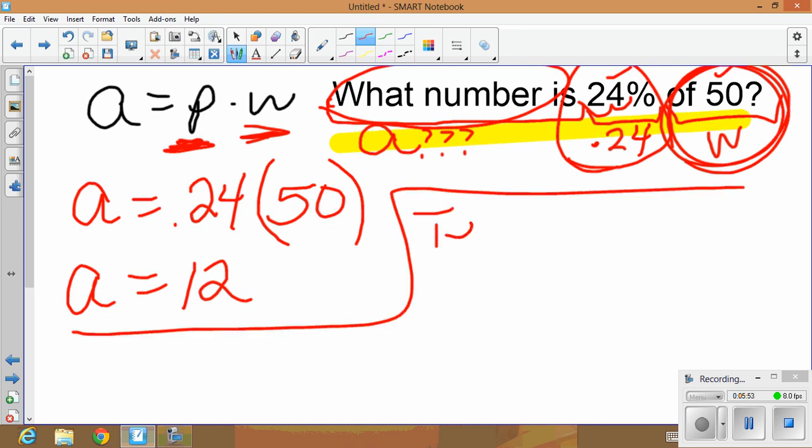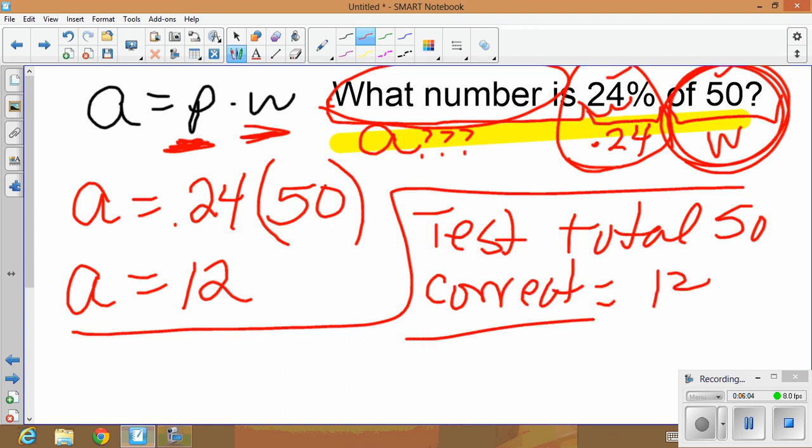What does that mean? If you took a test, if you took a test that had a total of 50 questions, the number that you got correct equals 12, and you got a grade of 24 percent. All right, next example.